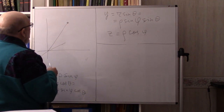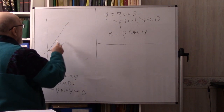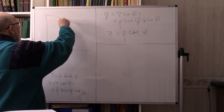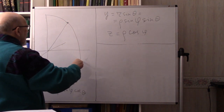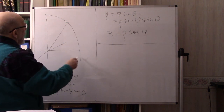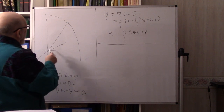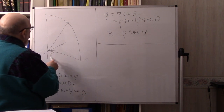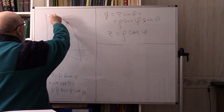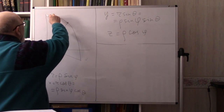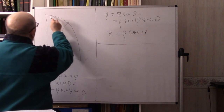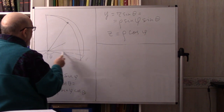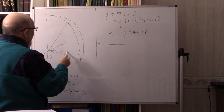Let me start over. This is our point (ρ, φ, θ). Let us consider the arc for ρ constant and θ constant — that's the θ direction. If you replace θ by θ + dθ, everything turns a little bit, and this angle is dθ.